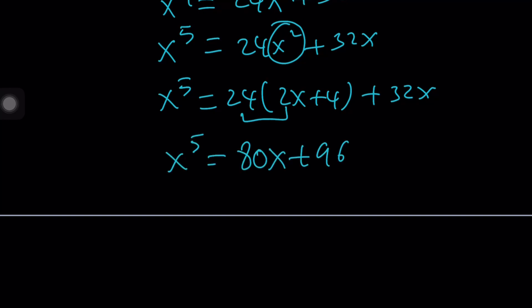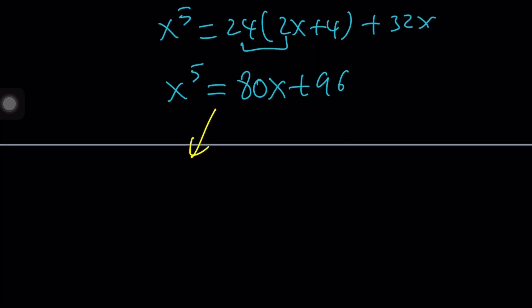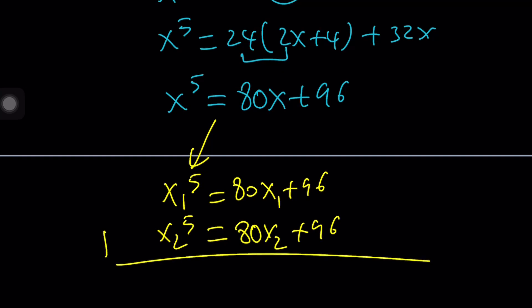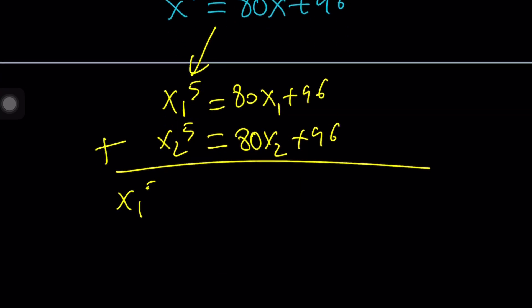Now, we want to apply this to both x1 and x2 because x is basically a root. So replace x with x1. You're going to get this. And with x2, you're going to get that. Well, that should be an x1, by the way. And this gives us the sum of the fifth powers in terms of the sum of the first powers.